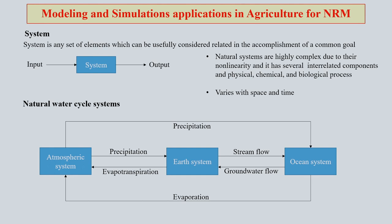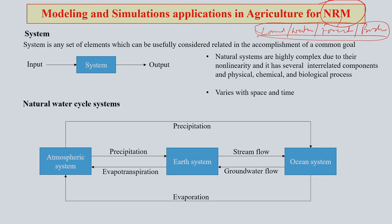Modeling or simulation exercise, when we say that, we mean basically a system — a composite system which is a set of various elements that can be usefully considered in relation to the accomplishment of our objective or goal. For NRM, we know that many things come into play: land, water, forest, biodiversity. People are extensively using modeling tools for almost all of these aspects which are basically part of natural resources.